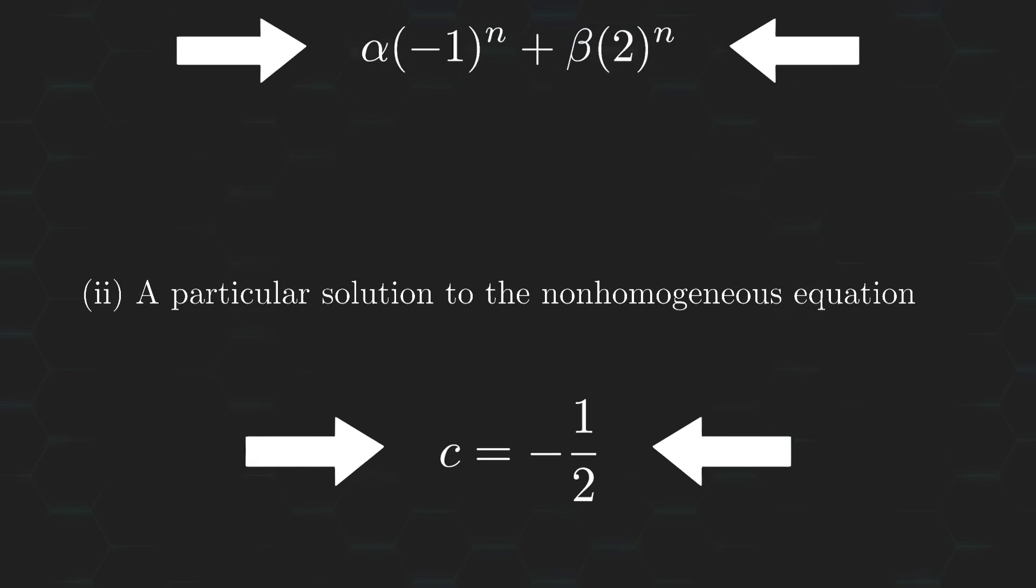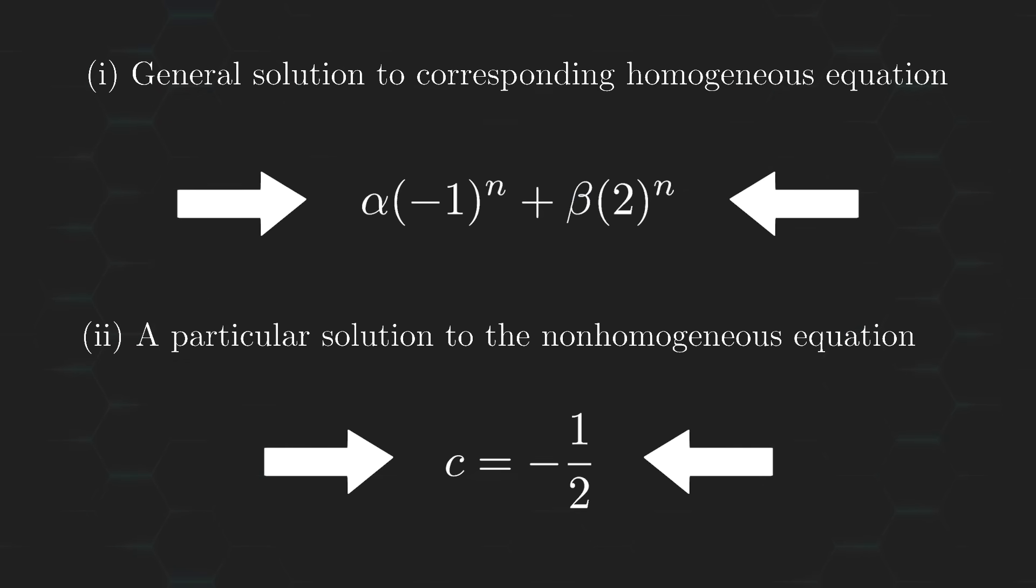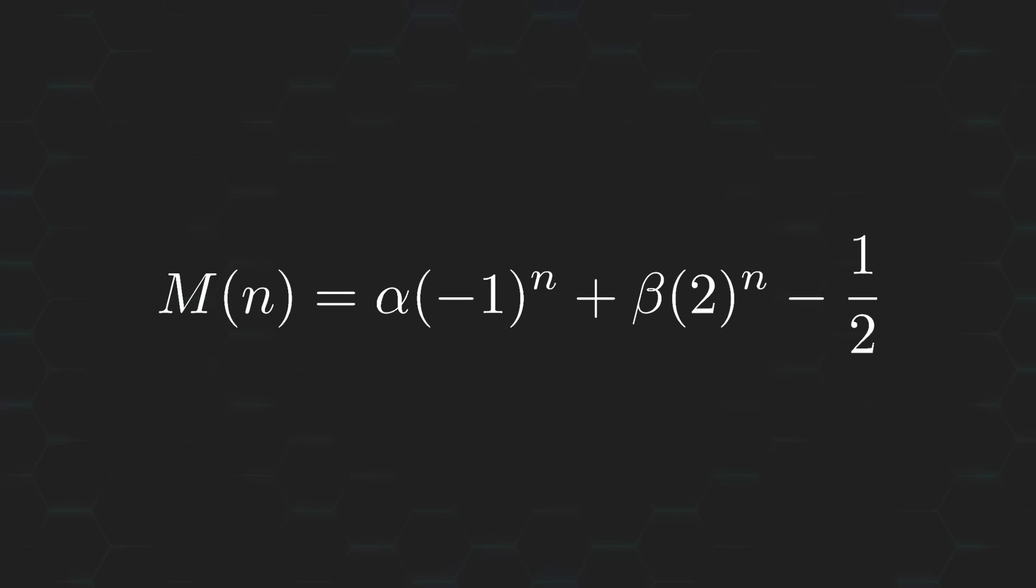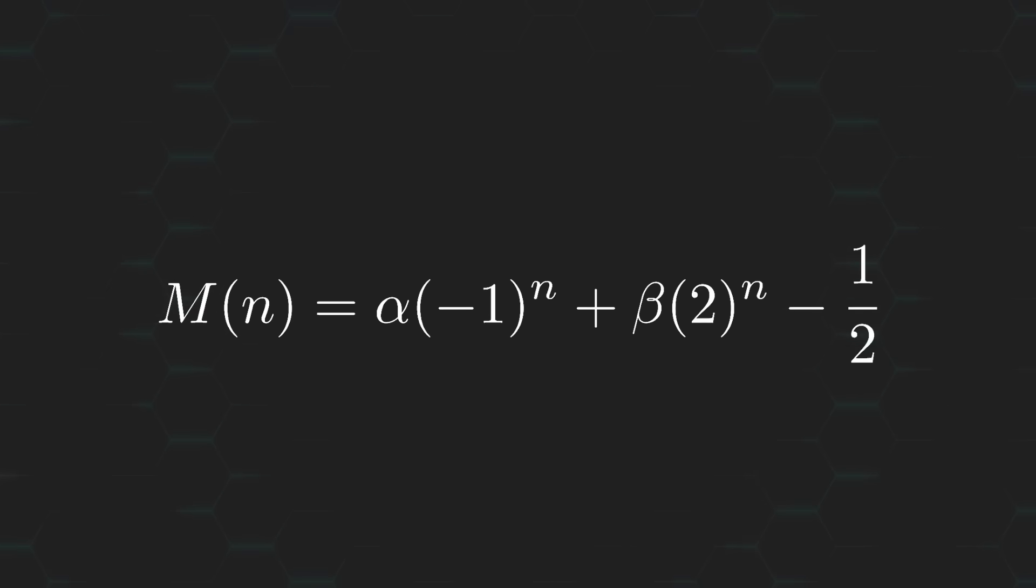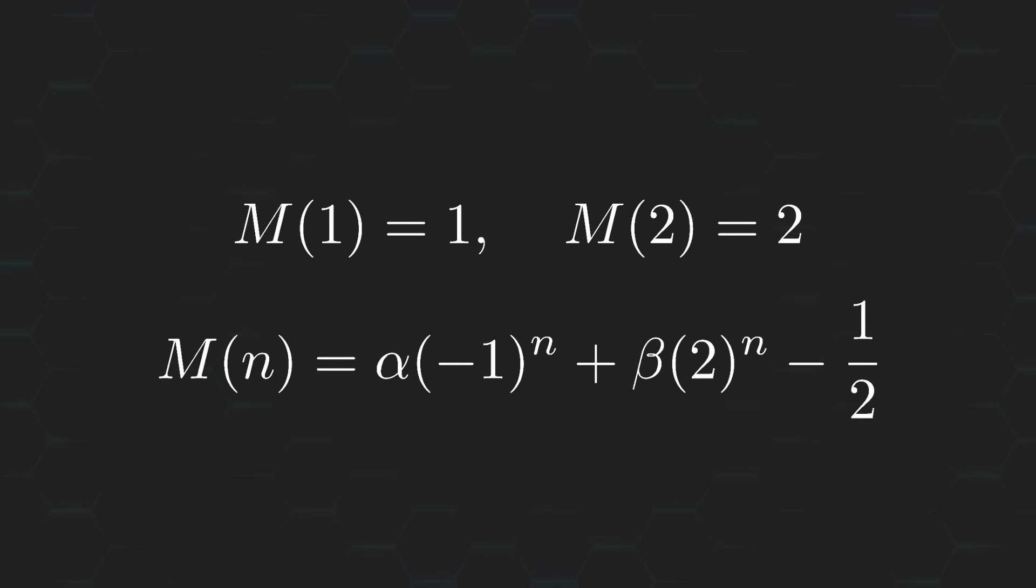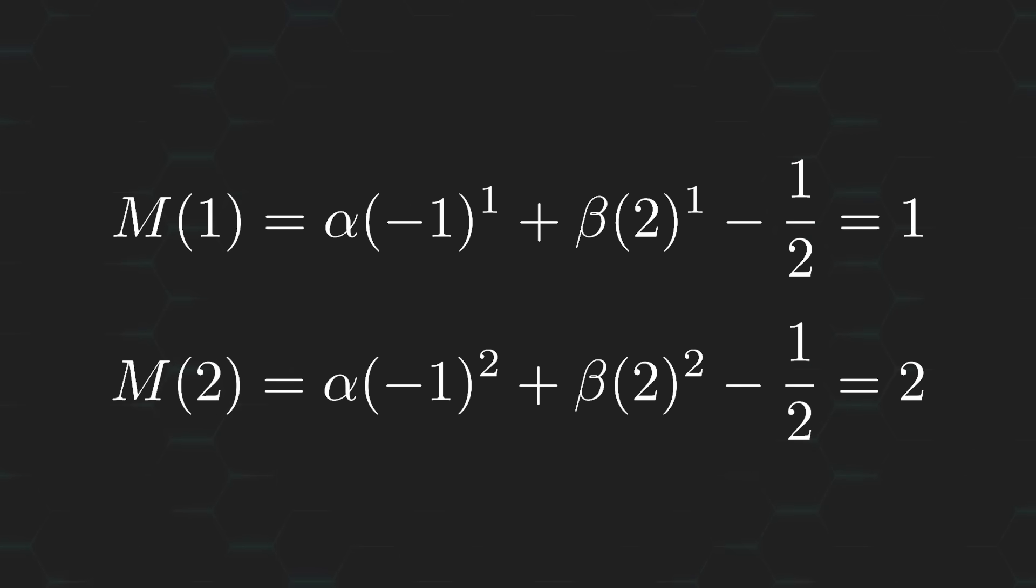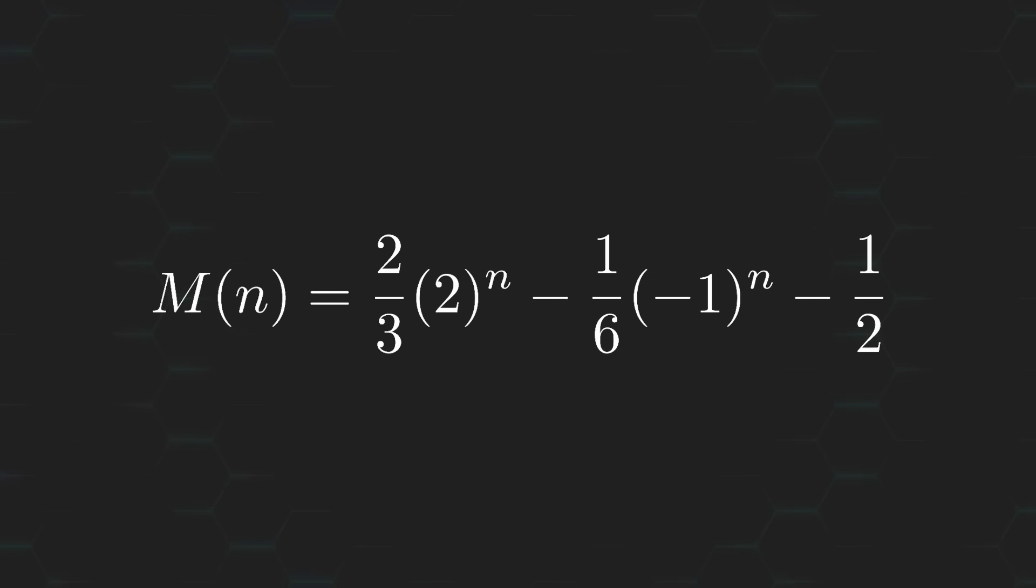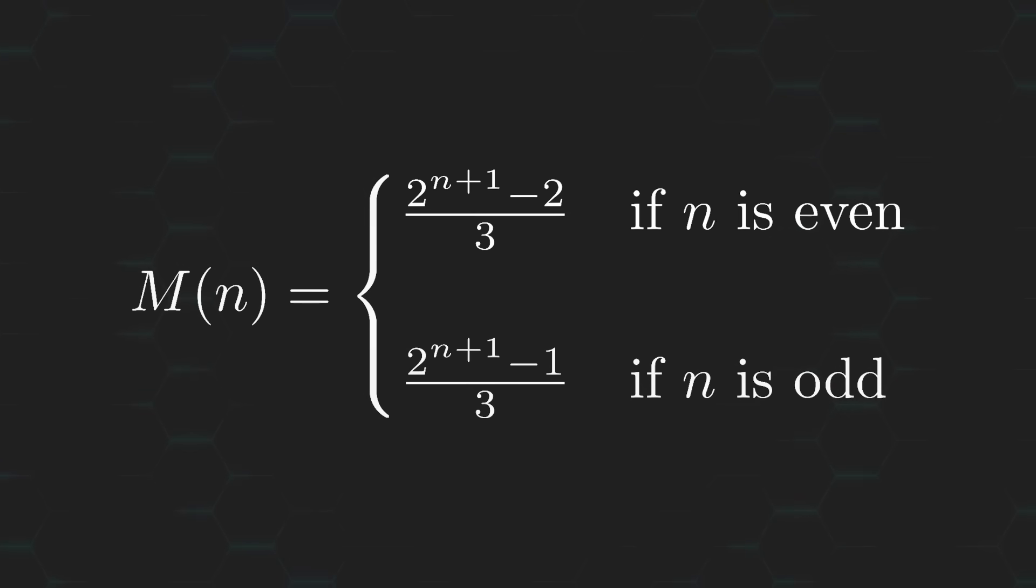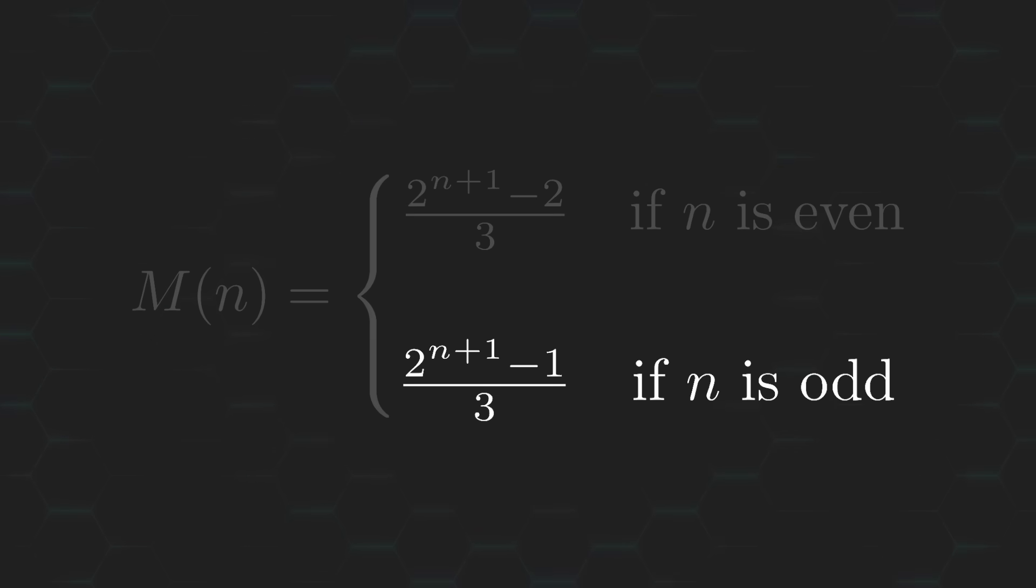All right, cool, we're almost done here. Recall that the general solution to our recurrence equation can be obtained by simply adding together the two solutions we just found. And there we have it! The last thing we need to deal with is figuring out what alpha and beta are equal to. And to do that, we need to put our initial conditions to use. This will give us two equations with two unknowns, which I'm sure you can easily solve to obtain the values we're after. And that's it! We found a closed-form solution to our recurrence equation, which we can simplify a bit further to distinguish it for even values of n and odd values of n.